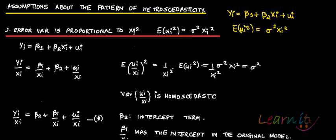Now ui over xi is the new error term. What will be the variance of this new error term? It is E of (ui over xi) squared. Since xi is non-stochastic, it comes out of the expectation: 1 over xi squared times E of ui squared. Since E of ui squared equals sigma squared xi squared, these cancel out and you have just sigma squared. Note there is no i subscript, so the new error term becomes homoscedastic.